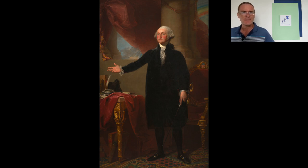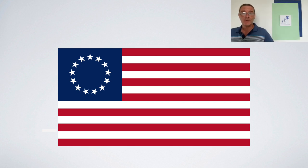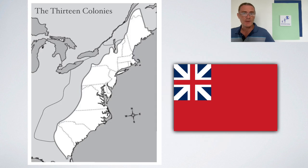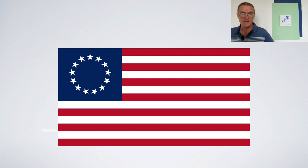Now let's talk about the design. It's very straightforward. One element are the 13 red and white stripes. These represent the 13 colonies that were originally part of the British Empire. In the blue corner, there were originally 13 stars in a circle, representing a union, which shows that they had become 13 states of a new country, the United States of America.